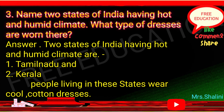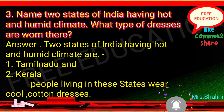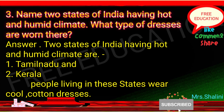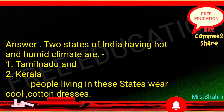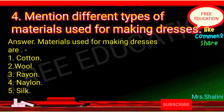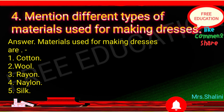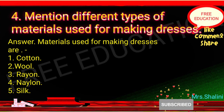Question 3: Name two states of India having hot and humid climate. What type of dresses are worn there? Answer: Two states of India having hot and humid climate are: 1. Tamil Nadu and 2. Kerala. People living in these states wear cool cotton dresses. Question 4: Mention different types of materials used for making dresses. Answer: Materials used for making dresses are: 1. Cotton, 2. Wool, 3. Rayon, 4. Nylon, 5. Silk.